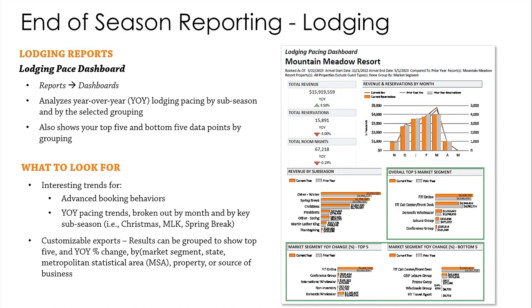You can also show overall top five and year-over-year change by state, by metropolitan statistical area, property, or source of business. So this report really gives you a lot of different pivots that you can take a look at, depending on what you're looking for and what your reservations team is looking at.